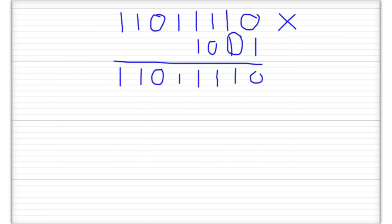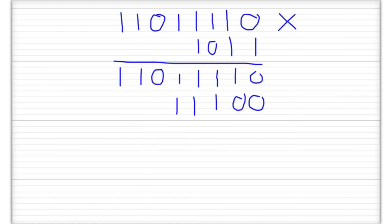Moving over to the next digit: because we're moving over here, we need to put a 0 there and shift over to the left 1 digit. So: 1 times 0 is 0, 1 times 1 is 1, 1 times 1 is 1, 1 times 1 is 1, 1 times 1 is 1, 1 times 1 is 1, 1 times 0 is 0, 1 times 1 is 1, and 1 times 1 is 1.